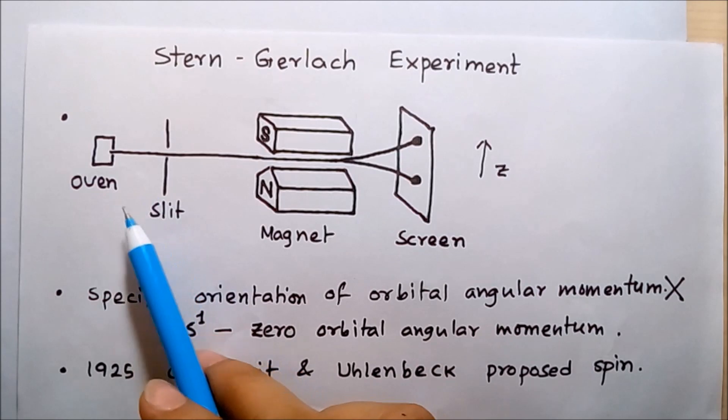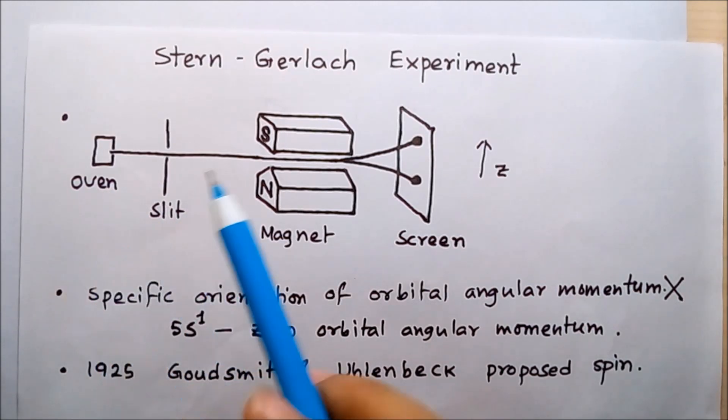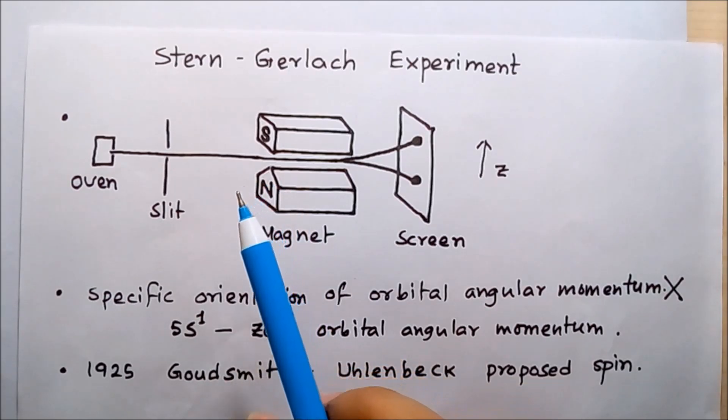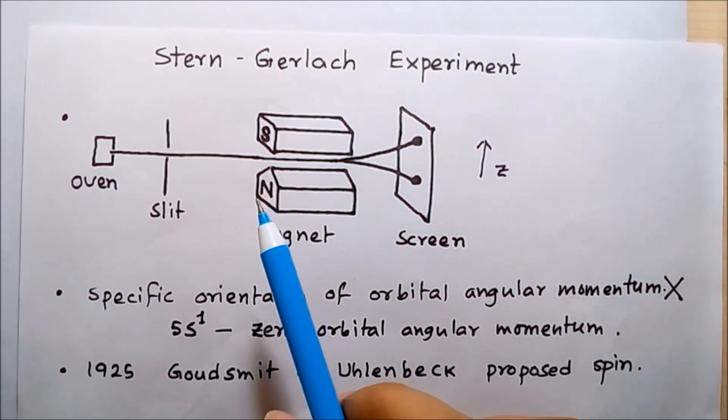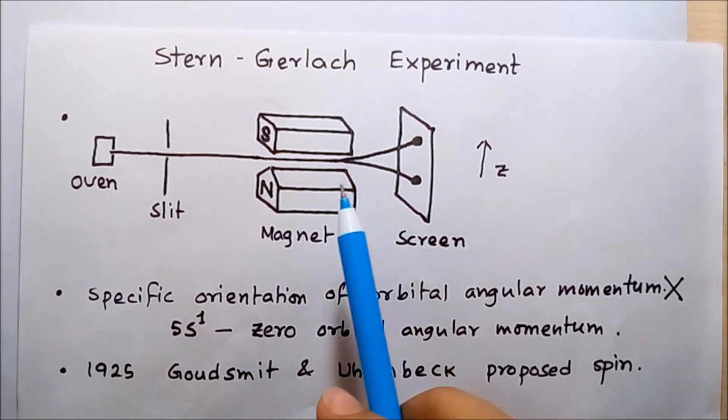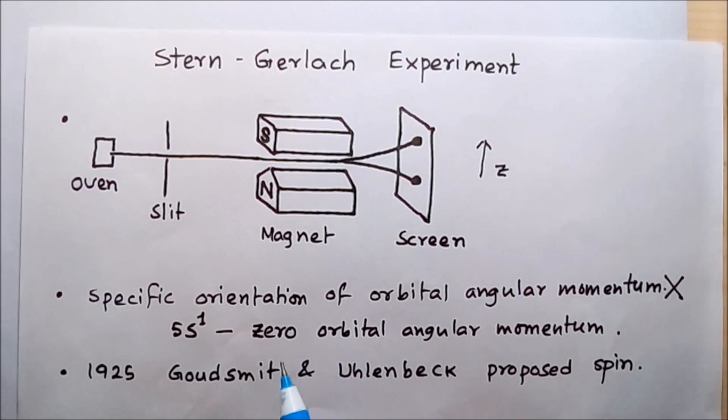As there is no orbital angular momentum in the silver atom, it cannot produce magnetic moment due to orbital angular momentum that can interact with this magnetic field. On the other hand, if the outermost electron has a spin angular momentum, due to this spinning the electron can generate the magnetic moment, and this magnetic moment can interact with the magnetic field produced by the magnet. Due to that interaction force, the bending of the path occurs.